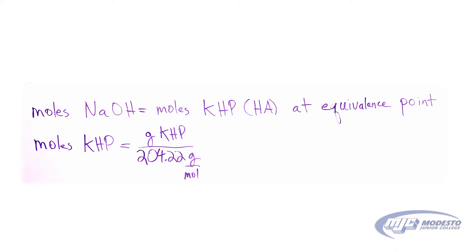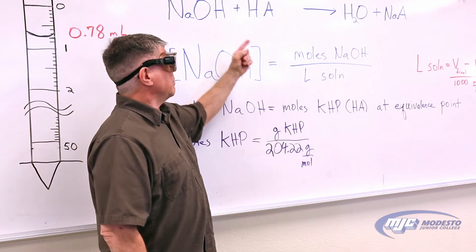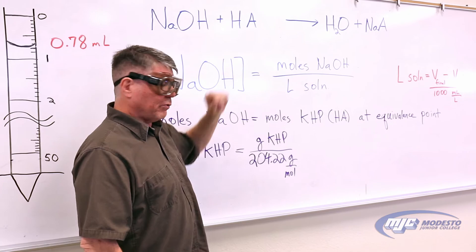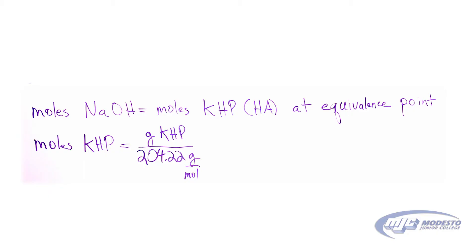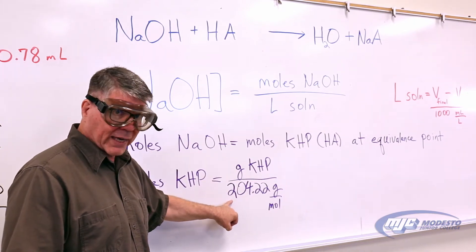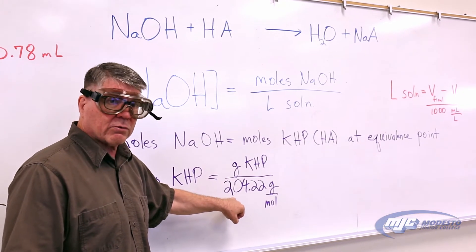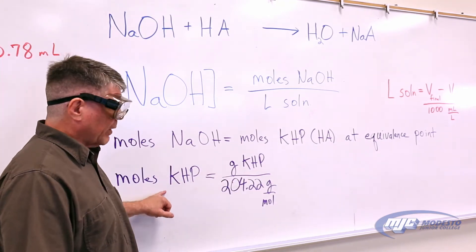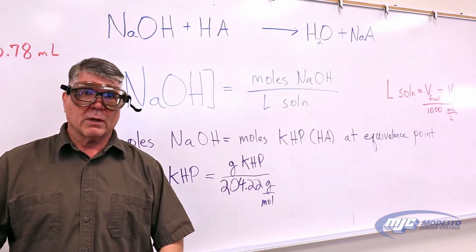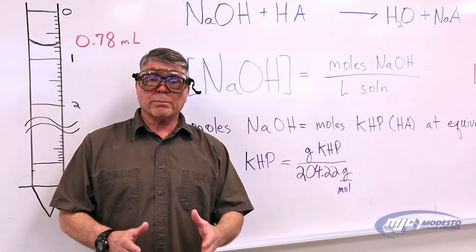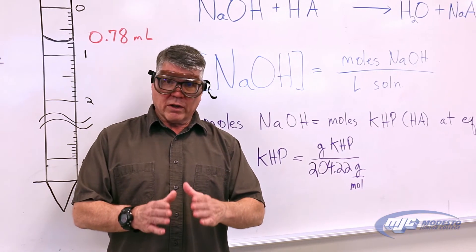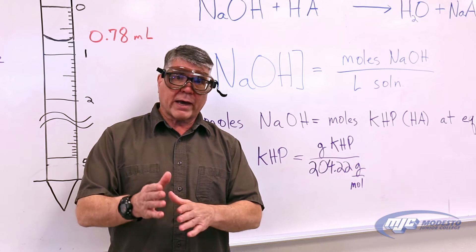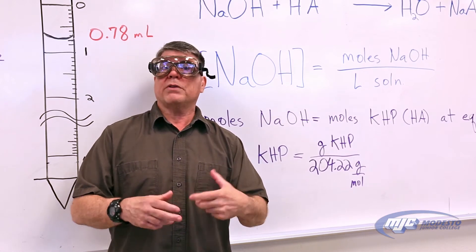To get the moles of sodium hydroxide, it's equal to the moles of KHP at the equivalence point — the point at which we've added exactly enough sodium hydroxide to just use up all that acid. To get the moles of KHP, we take the mass that we weigh out and divide by the molar mass of KHP, which is 204.22 grams per mole. That gives us our moles of KHP, which gives us our moles of sodium hydroxide. It's crucial that we know when we've added just enough sodium hydroxide to exactly use up all the acid — when we're at the equivalence point.